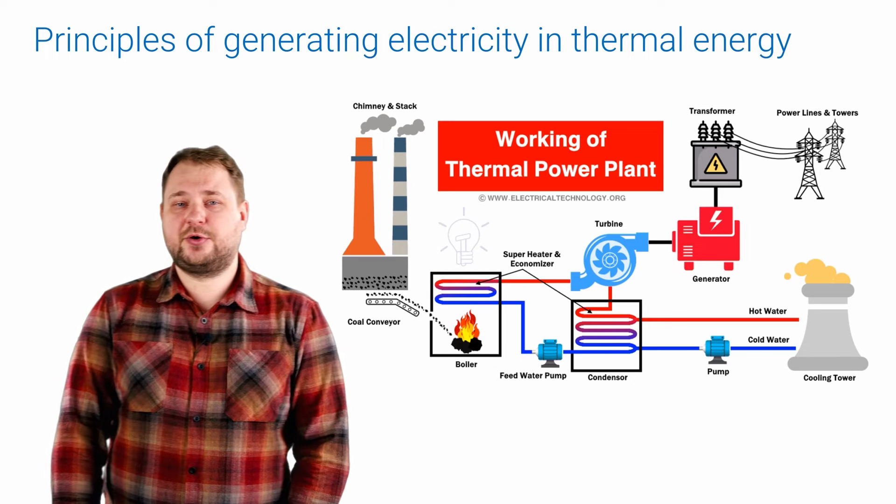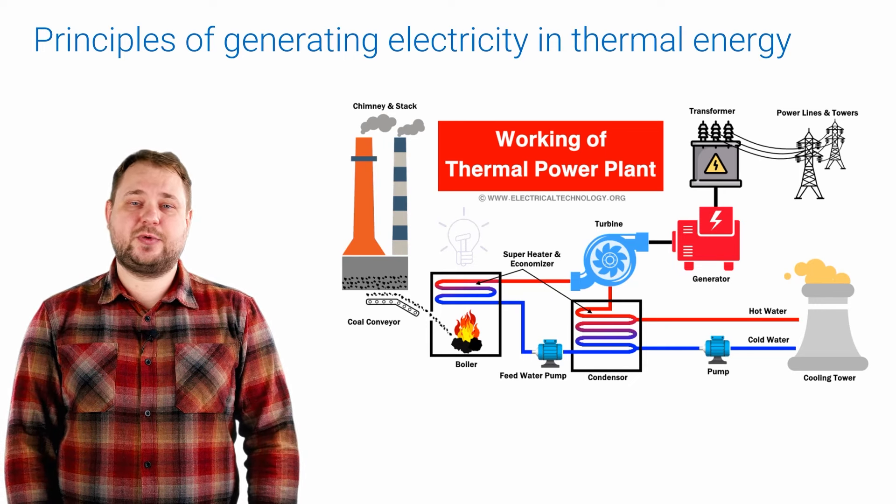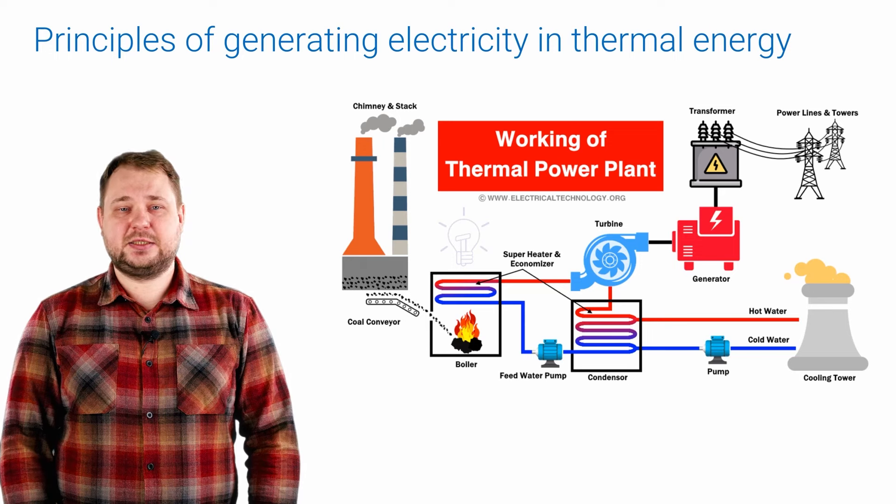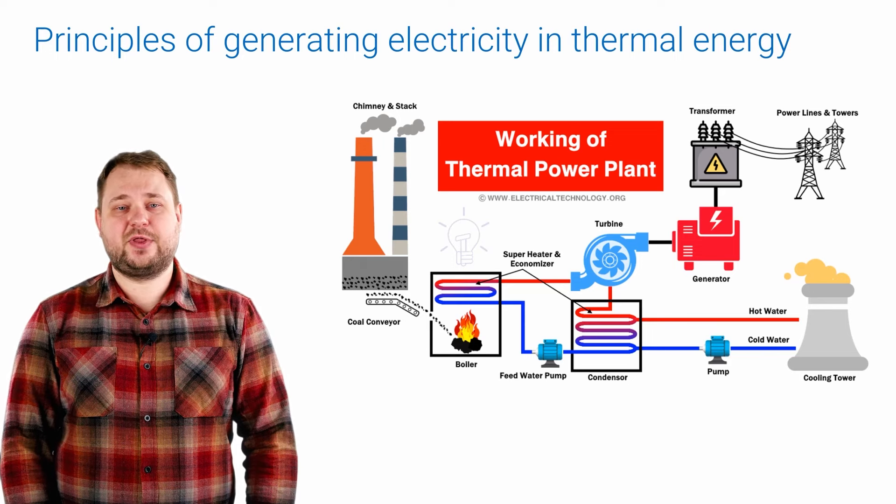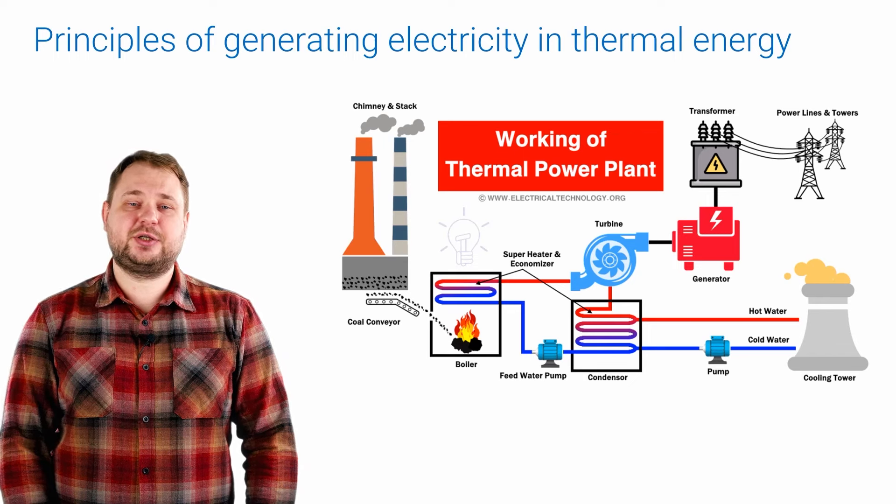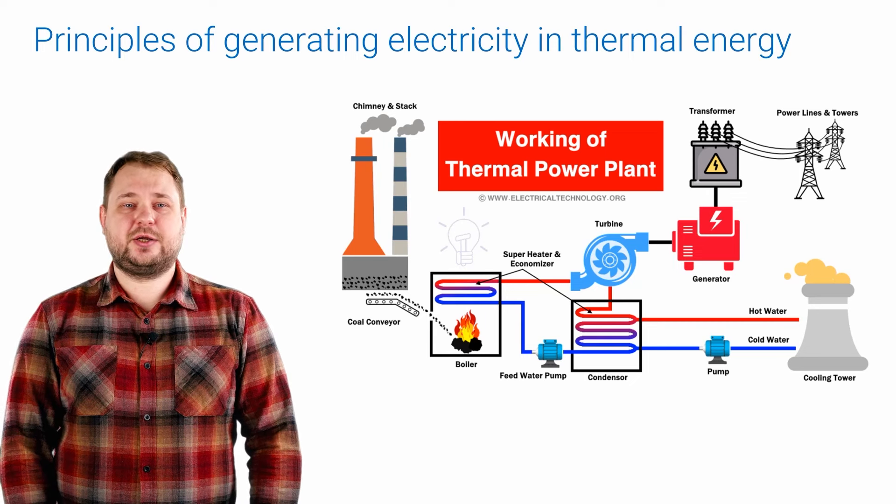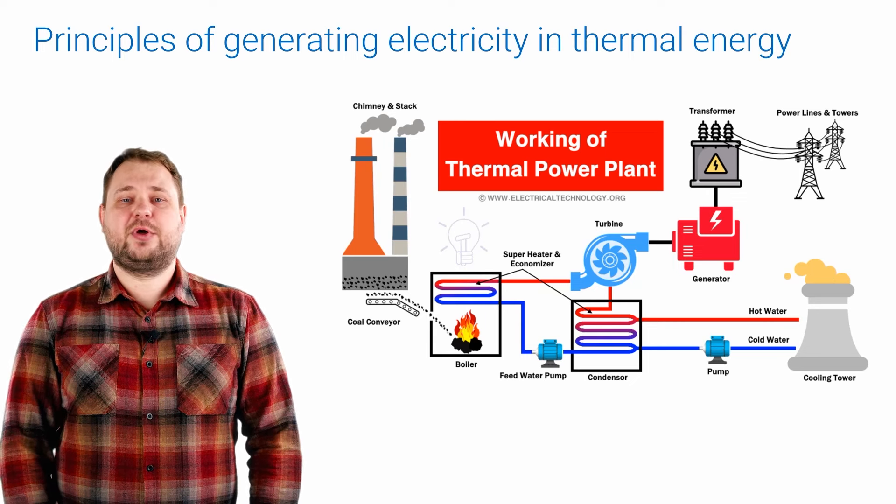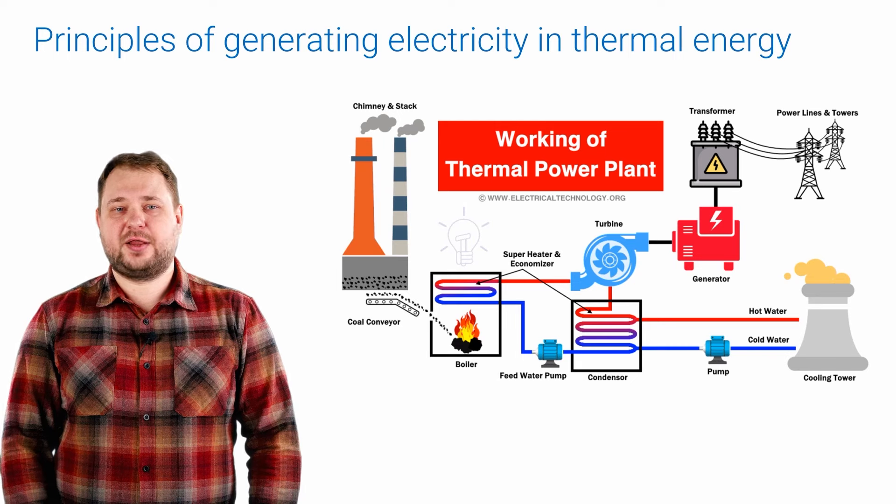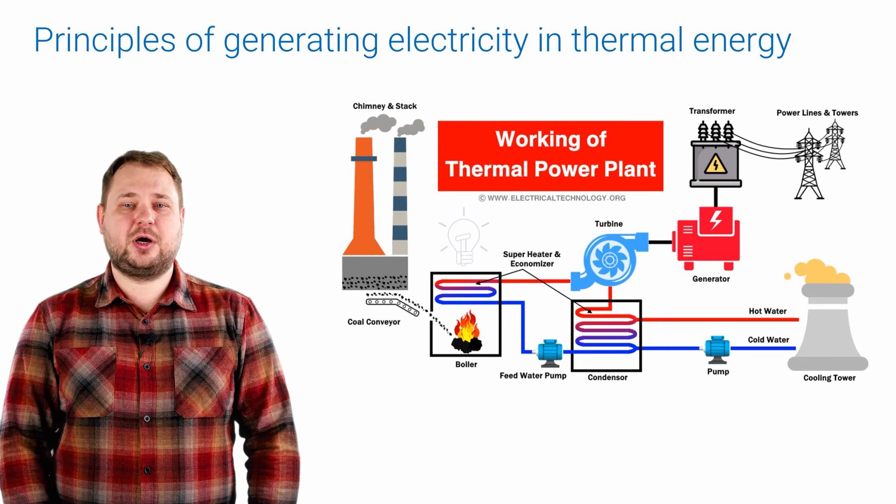The steam, after passing through the turbine, condenses and turns back into liquid form. This process increases the efficiency of the plant, since the heat released during condensation can be used to heat water in the boiler. Heat exchangers are used to transfer heat. With the help of cooling system, the station operates stably and prevents equipment overheating.